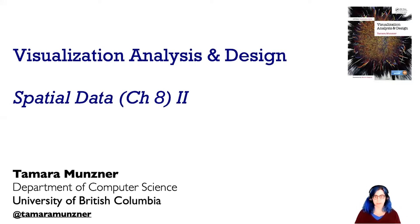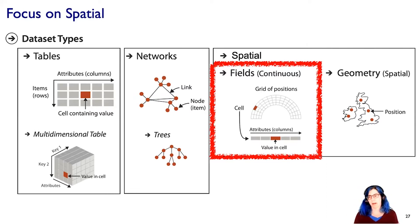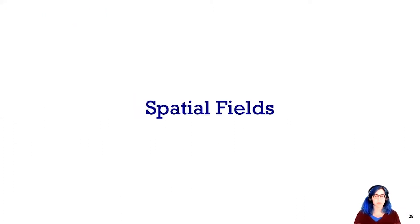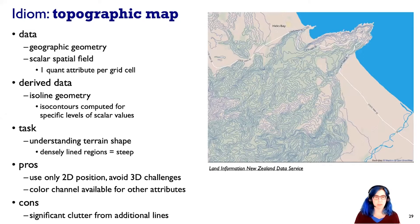Let's continue with spatial data. We have been talking about geographic maps, and now let's move on to talk about spatial fields. First, let's transition from the two by thinking about the intersection of spatial fields and geographic maps — and that is topographic maps.